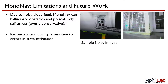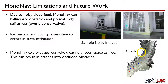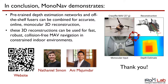In addition, the reconstruction quality is sensitive to errors in state estimation. Finally, MonoNav explores aggressively, treating unseen space as free. This can result in crashes into occluded obstacles. In conclusion, MonoNav demonstrates that pre-trained depth estimation networks and off-the-shelf fusers can be combined for accurate online monocular 3D reconstruction, and that these 3D reconstructions can be used for fast, robust, collision-free MAV navigation in constrained indoor environments.